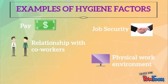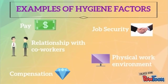An example for pay would be a salary commensurate with experience. For job security, the example would be when a worker prefers a job with a permanent position over one with a contract. For social needs, the example is having a good relationship or interaction with co-workers. Physical work environment refers to facilities provided in the workplace, like a pantry or office equipment in excellent condition. And compensation includes bonuses, incentives, and salary increments to reward hard work.